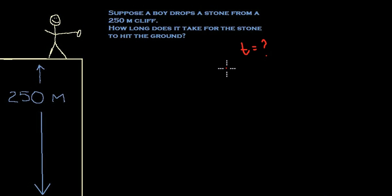The first thing that they gave us, well really the only thing that they gave us, was the displacement. They told us that the boy was up 250 meters from the ground. So our initial displacement, because X0 stands for initial displacement, our initial distance is at 250 meters. And right here at the bottom, our final distance is zero. So this stone is going to cover 250 meters.